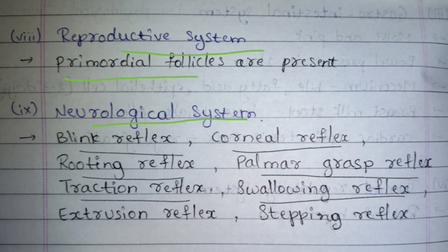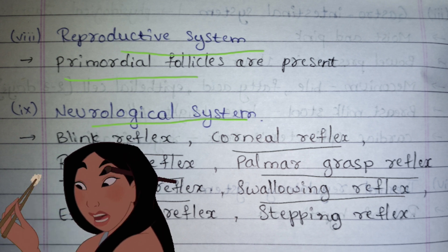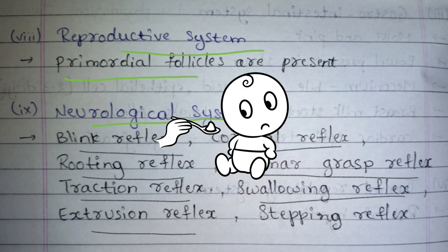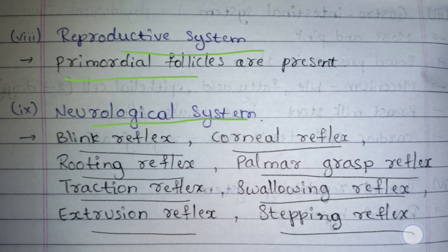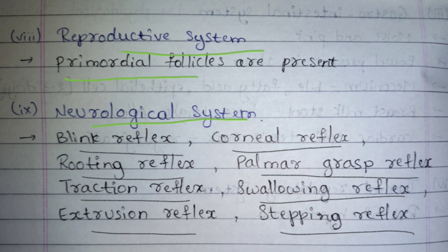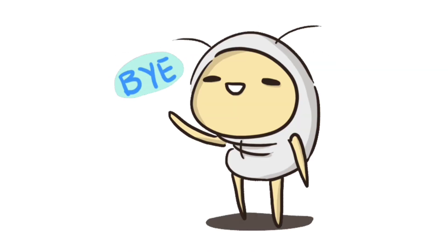Swallowing reflex: if you place food or milk in the posterior part of the mouth, the baby swallows it. Extrusion reflex: if you place anything at the tip of the mouth, the baby spits it out. Stepping reflex: if you make the baby stand straight, the baby tries to walk and takes steps forward. These are all the physiological changes and physiological adaptations. Questions will be provided at the end of the chapter — until then, stay tuned.